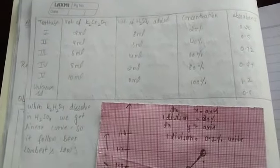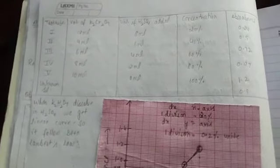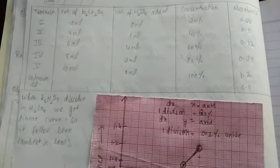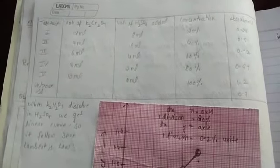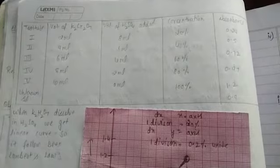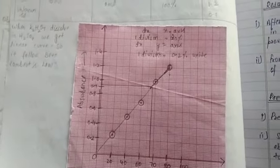We have 2 ml of potassium dichromate solution and 8 ml H₂SO₄ 20% concentration. Concentration is 0.24. When potassium dichromate dissolves in H₂SO₄, we get a linear curve, so it follows Beer-Lambert's law.